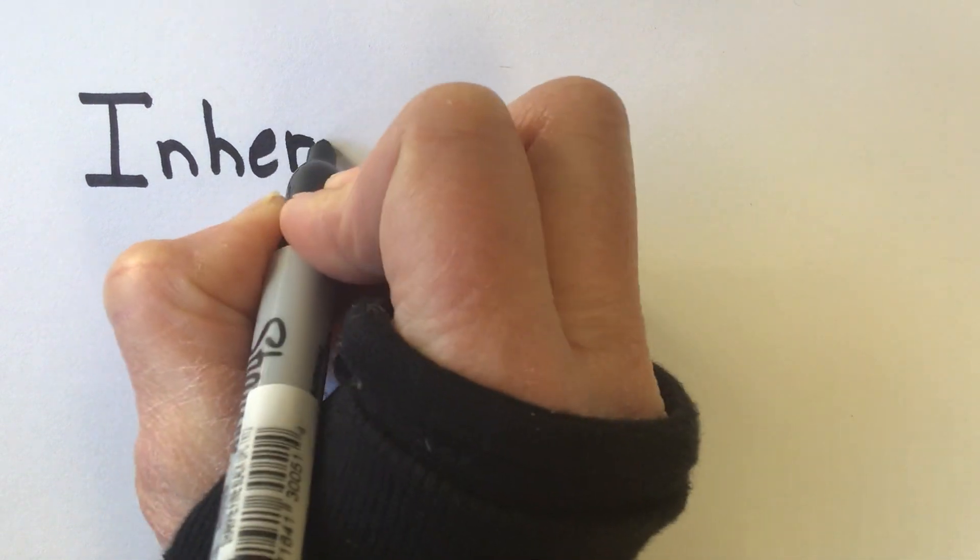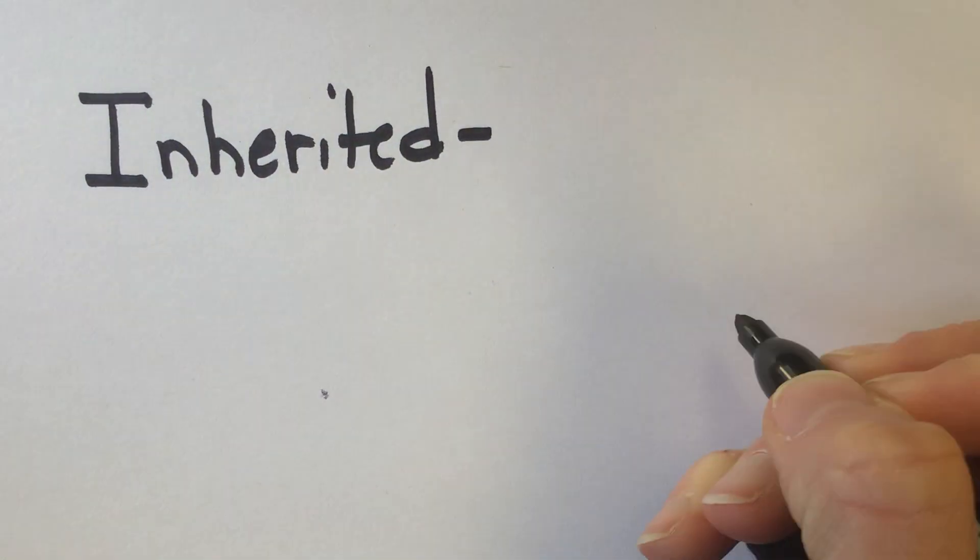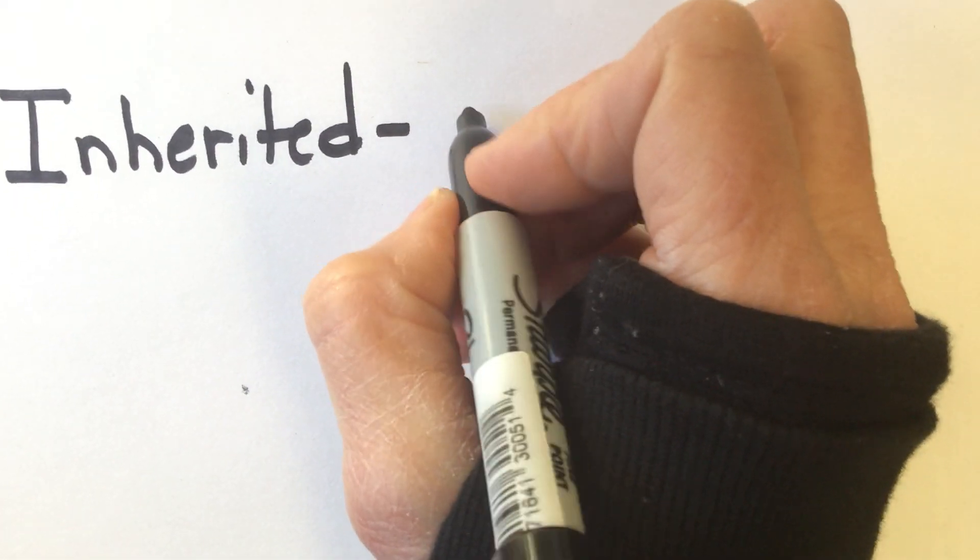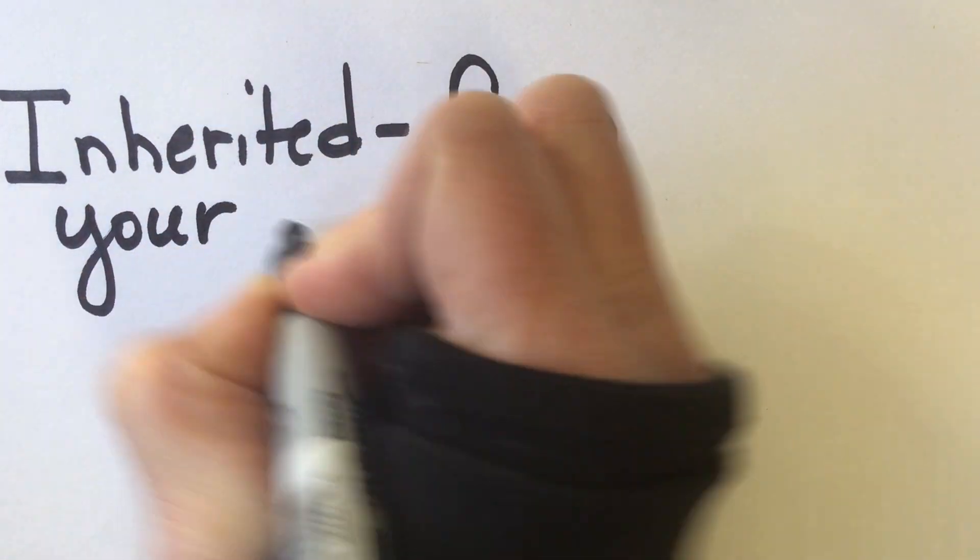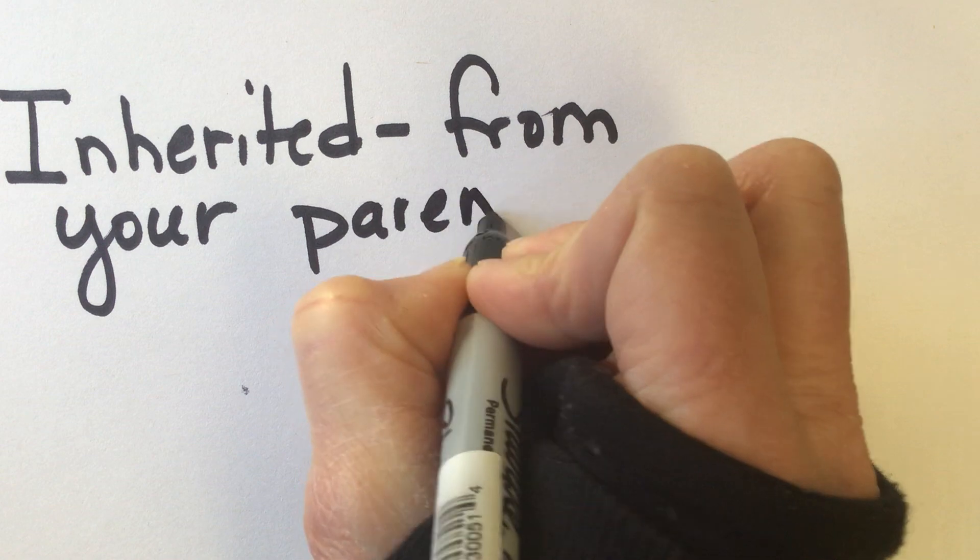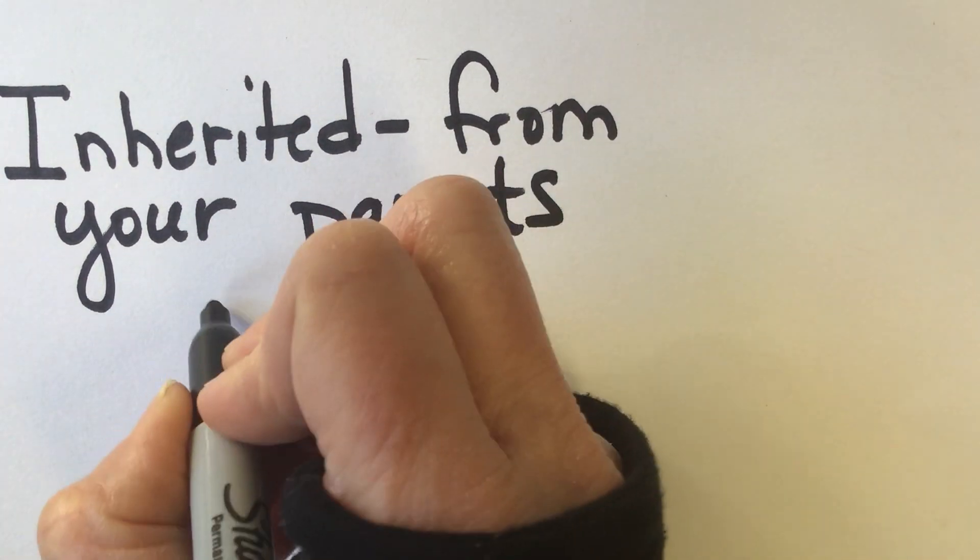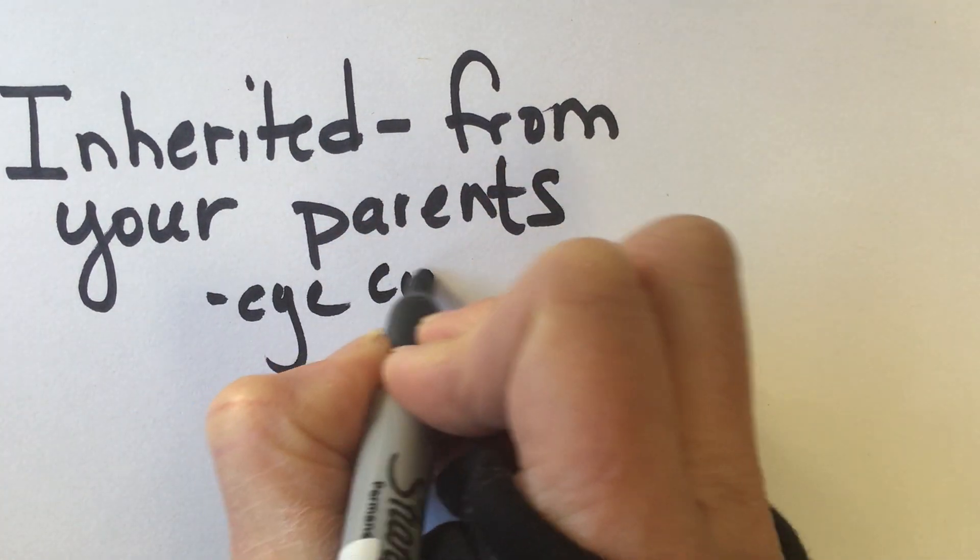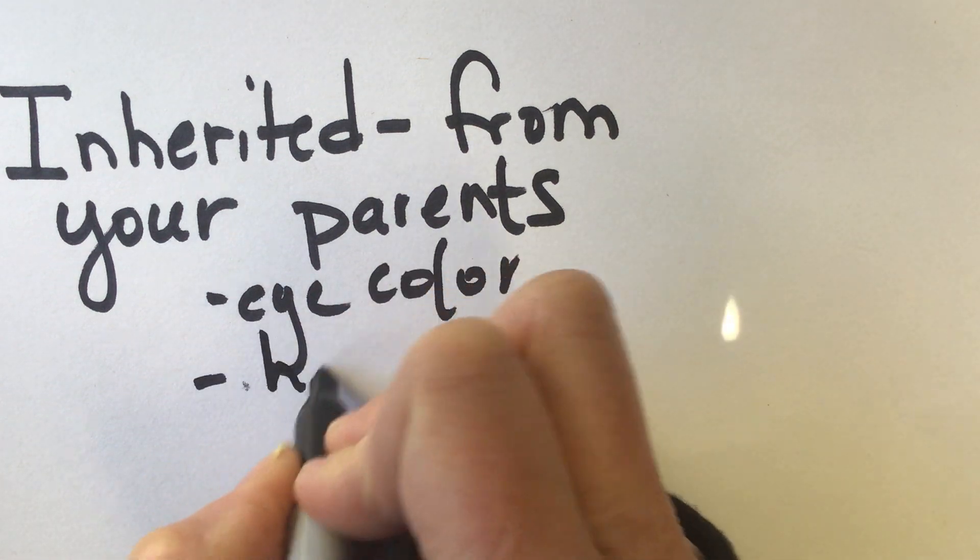Now, the next question is about the difference between an inherited and an acquired trait. So if you have an inherited trait, this is something you get from your parents. This is from your parents. So, for example, those would be things like your eye color, your hair color.